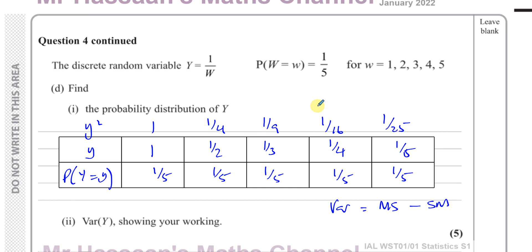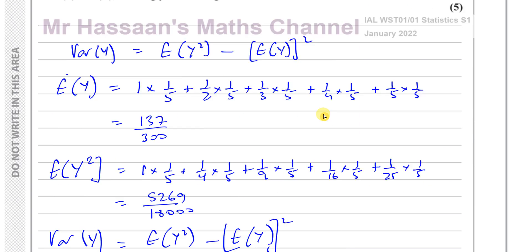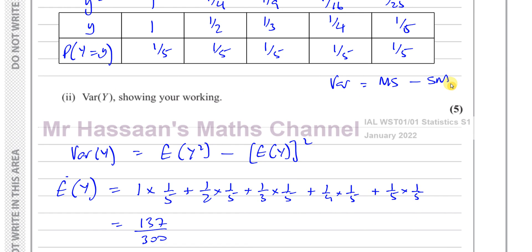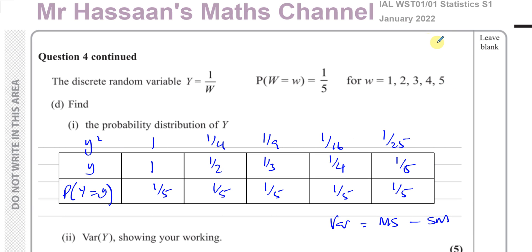Other questions from this January 2022 S1 paper can be found in the playlist shown here. The link for the discrete random variables topic from S1 can be found in the link shown on screen. You can subscribe to the channel by clicking the link in the middle. Thank you for watching, and see you soon.